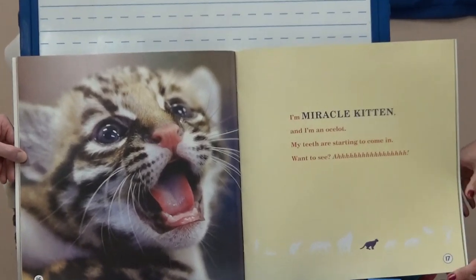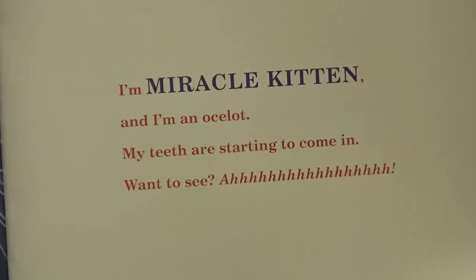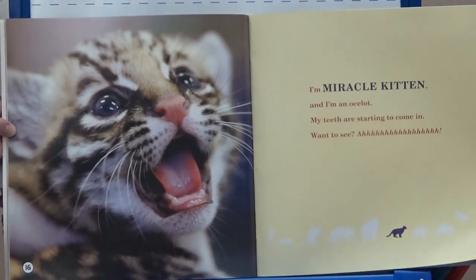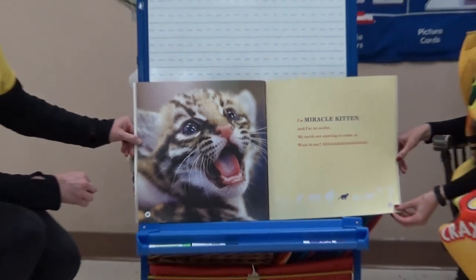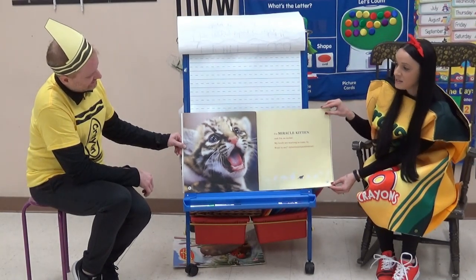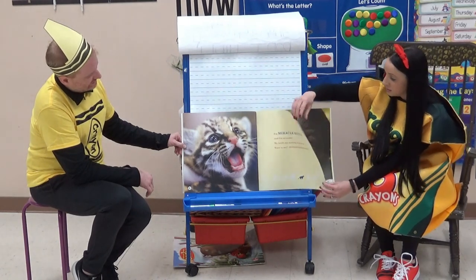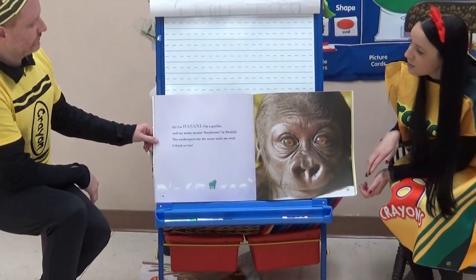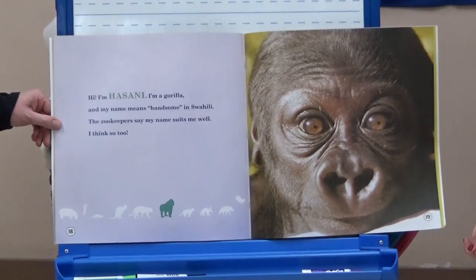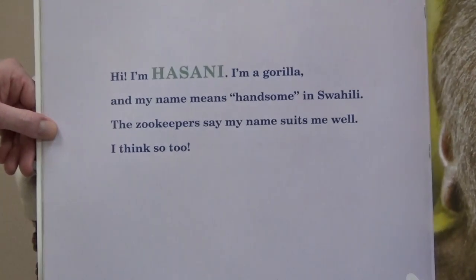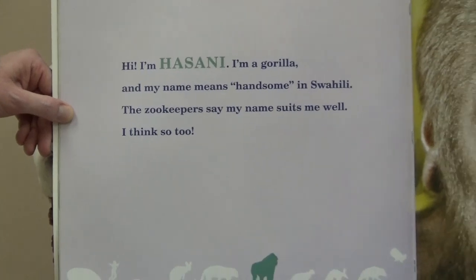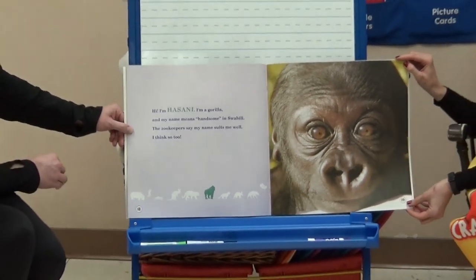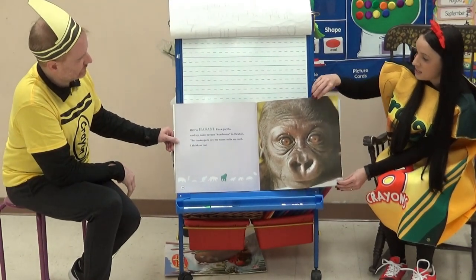'I'm Miracle Kitten, and I'm an ocelot. My teeth are starting to come in. Want to see?' So what kind of animal is an ocelot? A cat. But we don't want to have this kind of cat as our pet, because it's a wild animal, and wild animals are dangerous. 'Hi, I'm Hassani. I'm a gorilla, and my name means handsome in Swahili. The zookeepers say my name suits me well.' Zookeepers are people that take care of animals in a zoo. So where do you think our story takes place? In the zoo. These are all animals that we would see in a zoo.